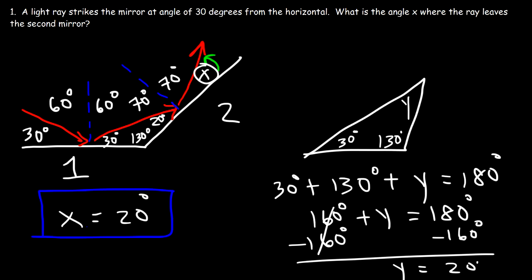So X is 20 degrees — that's the angle at which the reflected ray leaves the second mirror. The angle of reflection for the second mirror is 70°, but the angle at which it leaves the mirror surface is 20°, which is what we're looking for.